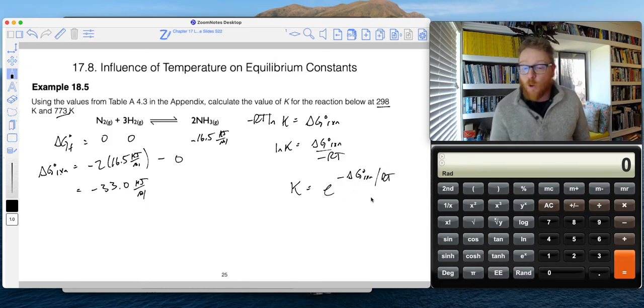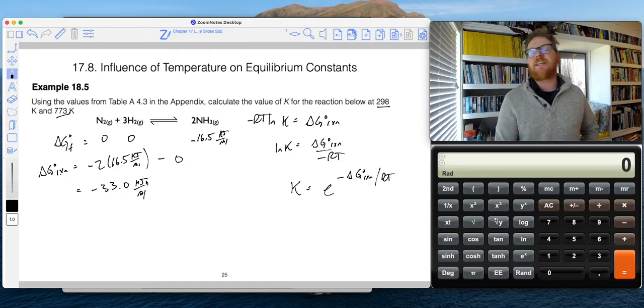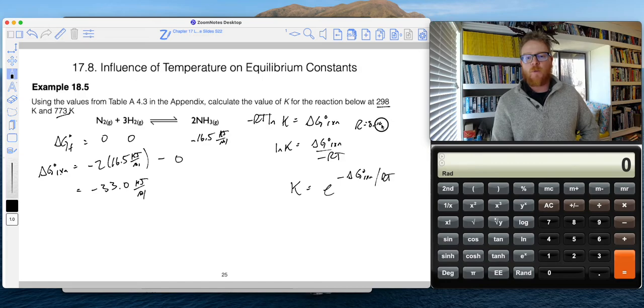So that's going to give us negative 33.0 kilojoules per mole. To use this equation here, I need to convert that into joules per mole, because my R value is 8.314 joule per mole K.